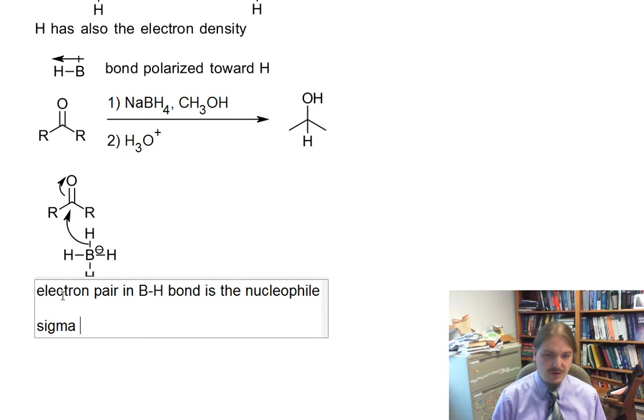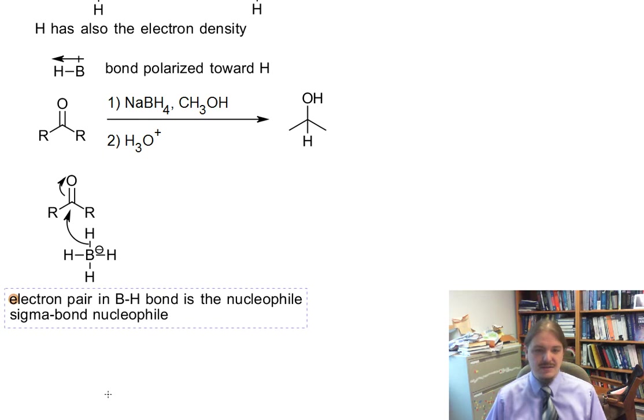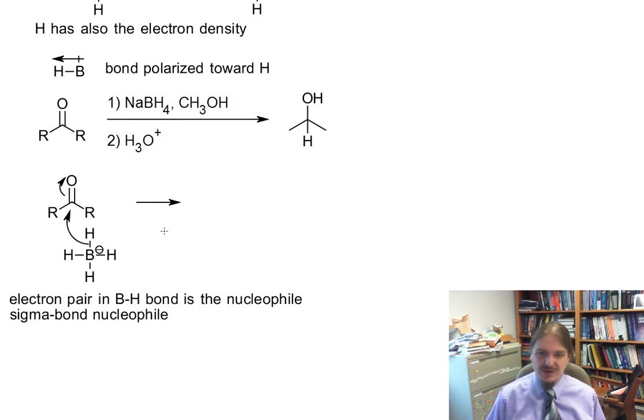So this is something I would call a sigma bond nucleophile. You may not have encountered something that is a sigma bond nucleophile, where it's an electron pair in a sigma bond that is the nucleophilic electron pair. These things, you're going to encounter others in this video series. And they are an important class of nucleophile in all kinds of organic reactions.